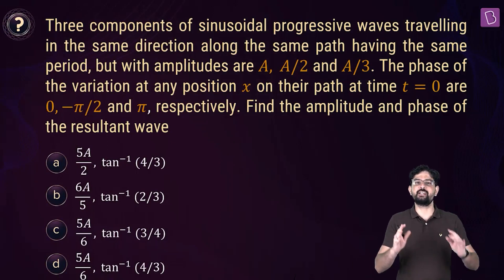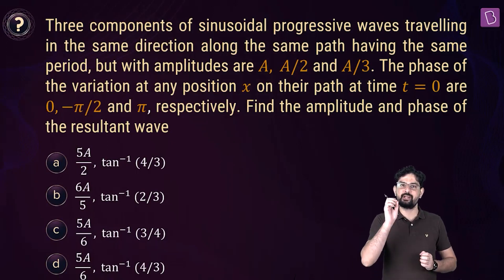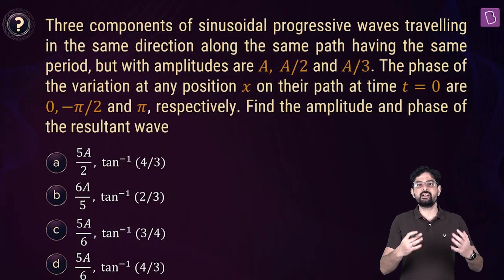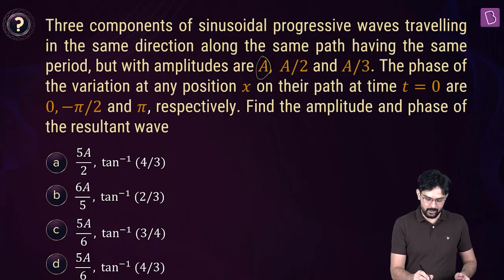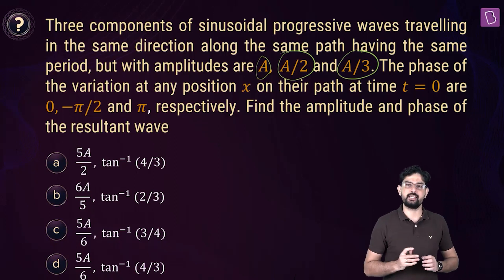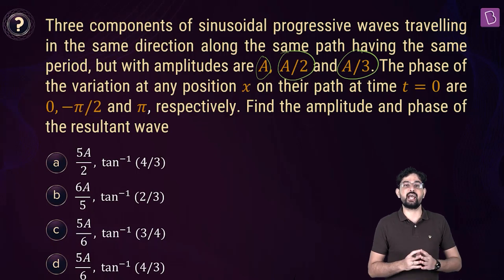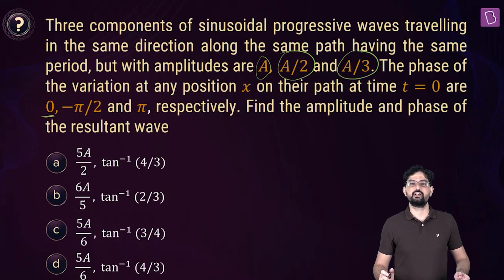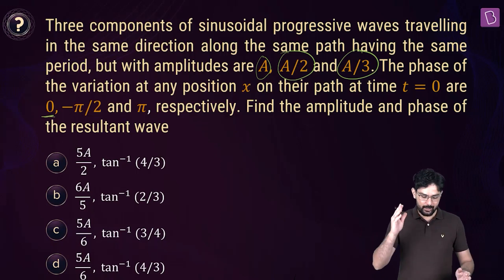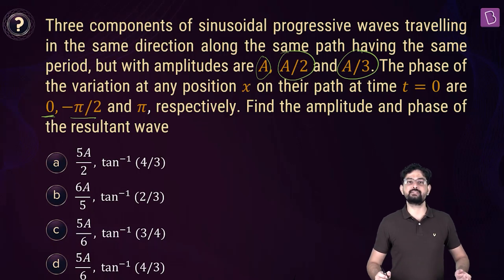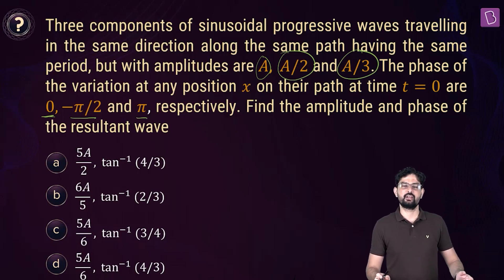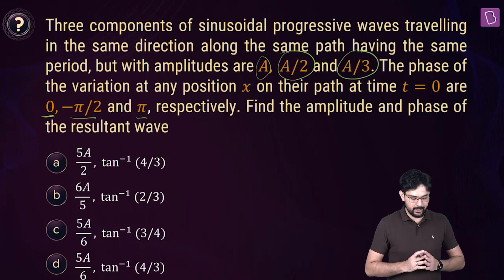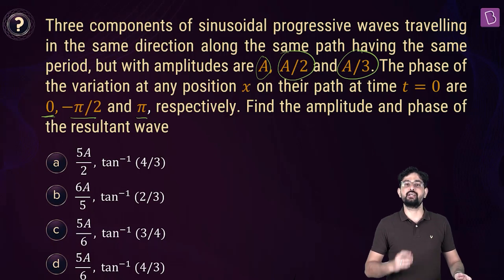Now three waves are set up along the same path with the same frequency but different amplitudes. The amplitude of the first wave is A, of the second one is A by 2, and the third one is A by 3. At some location x, the phase of the first wave is 0, the phase of the second wave is minus pi by 2, and the phase of the third wave is pi. Find the net amplitude and the phase of the resultant wave.